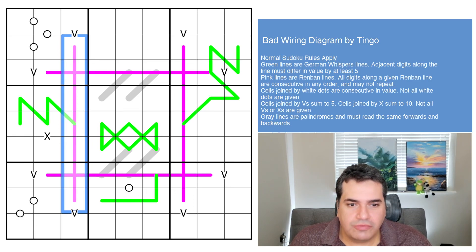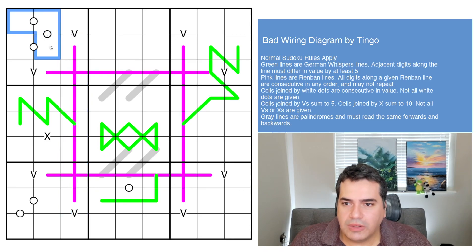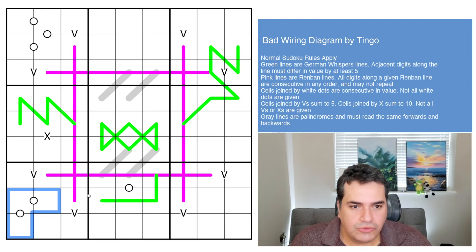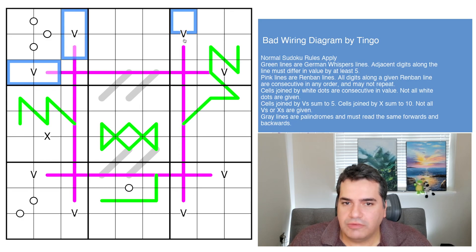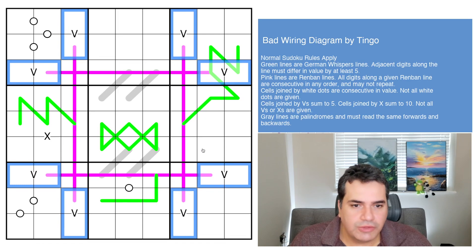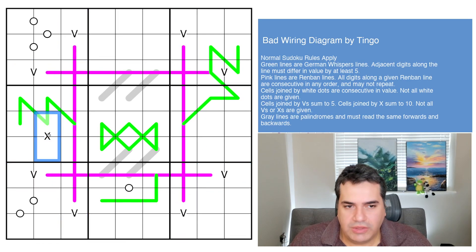Let's see, what else do we have? Cells joined by white dots are consecutive in value. We've got quite a few of them peppered throughout this grid today. Not all white dots are given, so no negative constraint. Cells joined by a V sum to five, and we've got a pattern here that I'm sure is going to be on the flow of solving today's case. Cells with an X sum to 10.